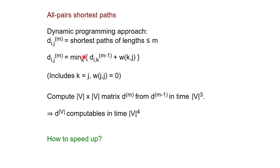So we can compute the next matrix in time V cubed, and if you want to get D to the N — D to the number of vertices — you can do this in time V to the four. This is a fairly simple approach, but we can actually speed it up with one nice clever idea.